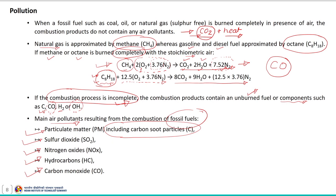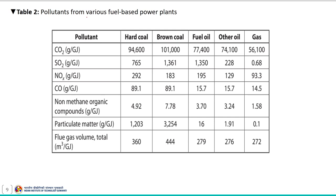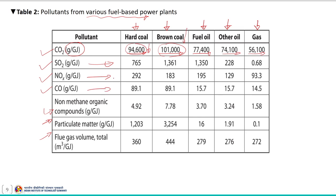Pollutants from various fuel-based power plants are depicted in tabular form along with their emission ranges. For example, the emission of carbon dioxide in grams per gigajoule using hard coal as fuel is around a certain value; for brown coal the value is around 101,000. Values for other fuels and other pollutants are also tabulated. This table will be very useful while practicing examples in this module, and examples on similar concepts will be given in the assignments.